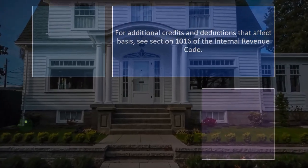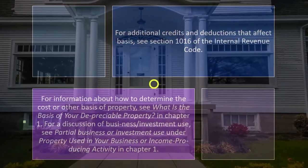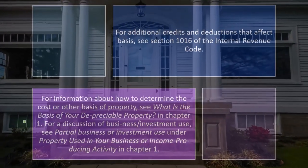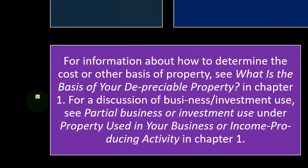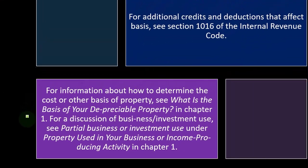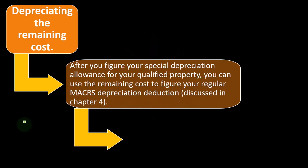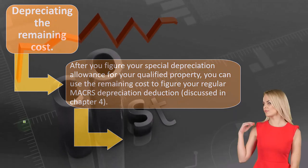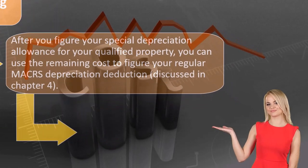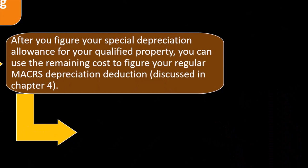For additional credits and deductions that affect basis, see Section 1016 of the Internal Revenue Code for information about how to elect the cost or other basis of property. See also 'What is the basis of your depreciable property' in Chapter 1 for a discussion of business use. After you take the special depreciation upfront, you may have basis left over that you need to depreciate going forward.